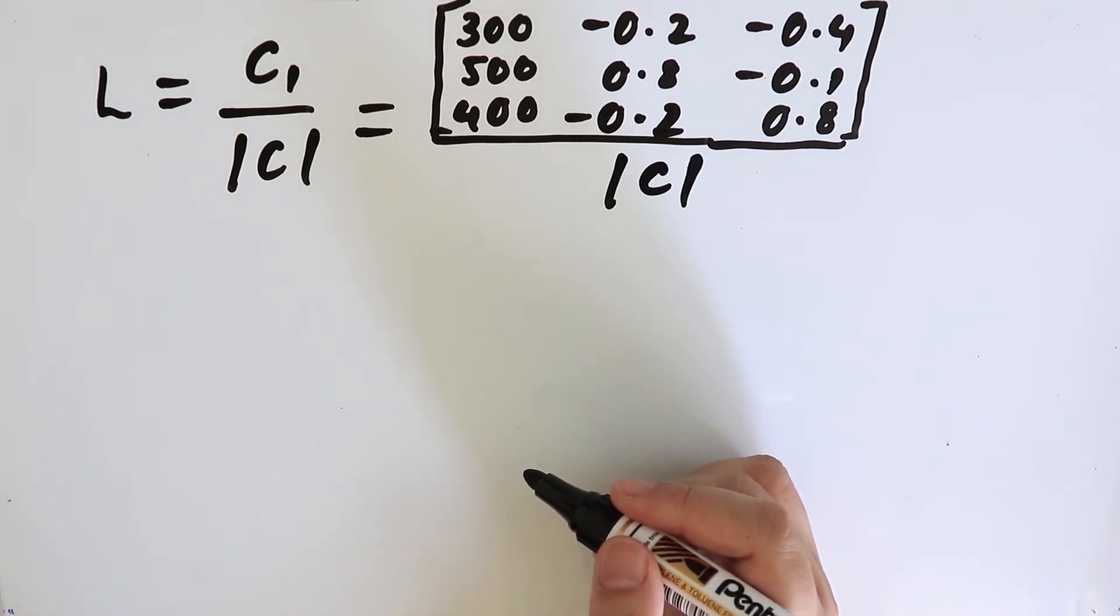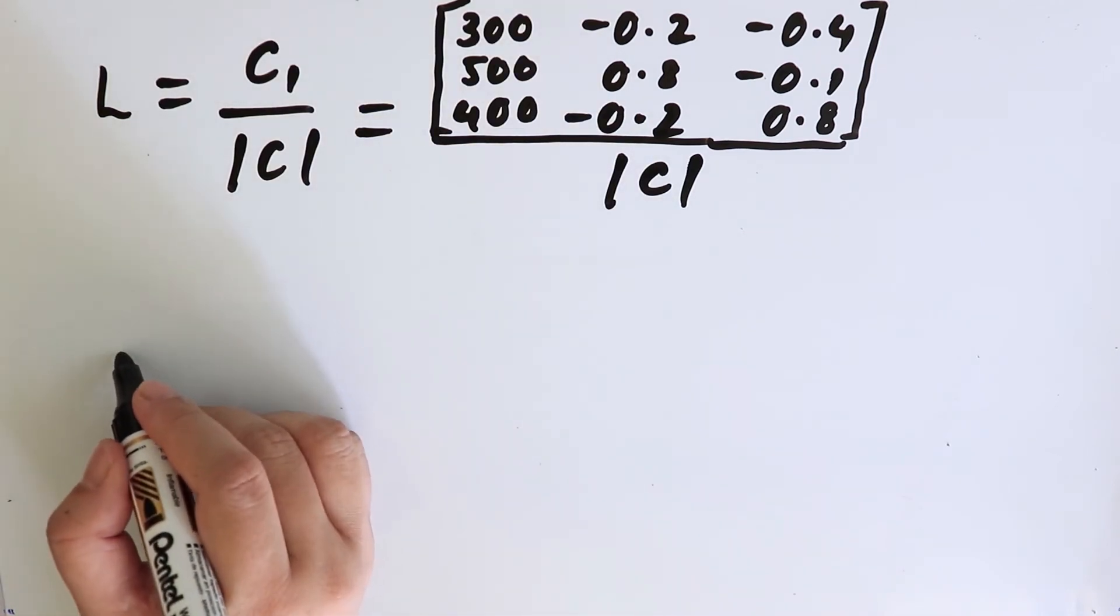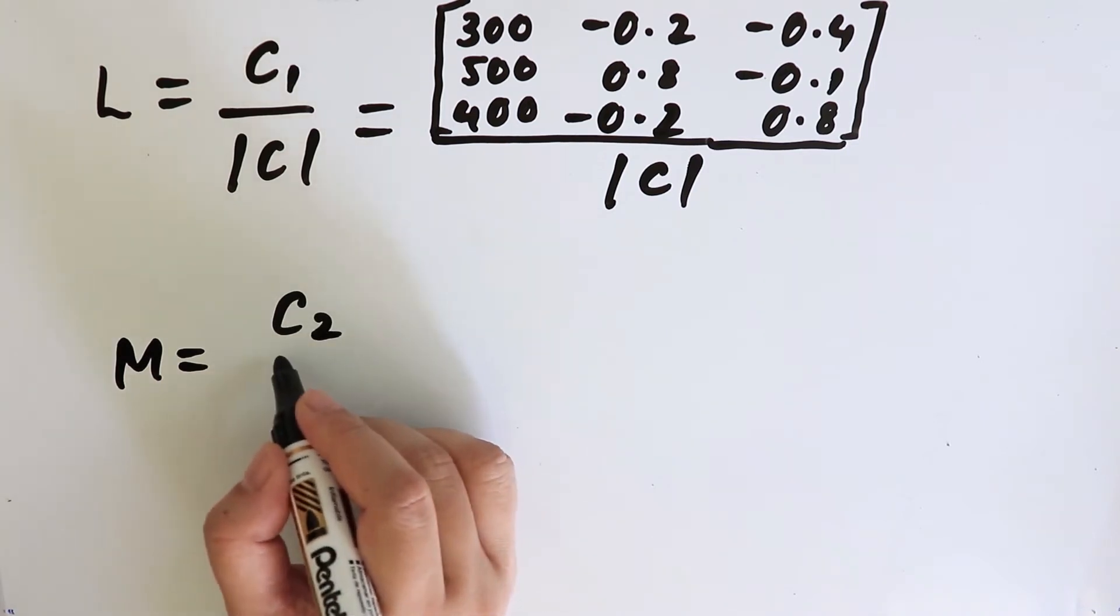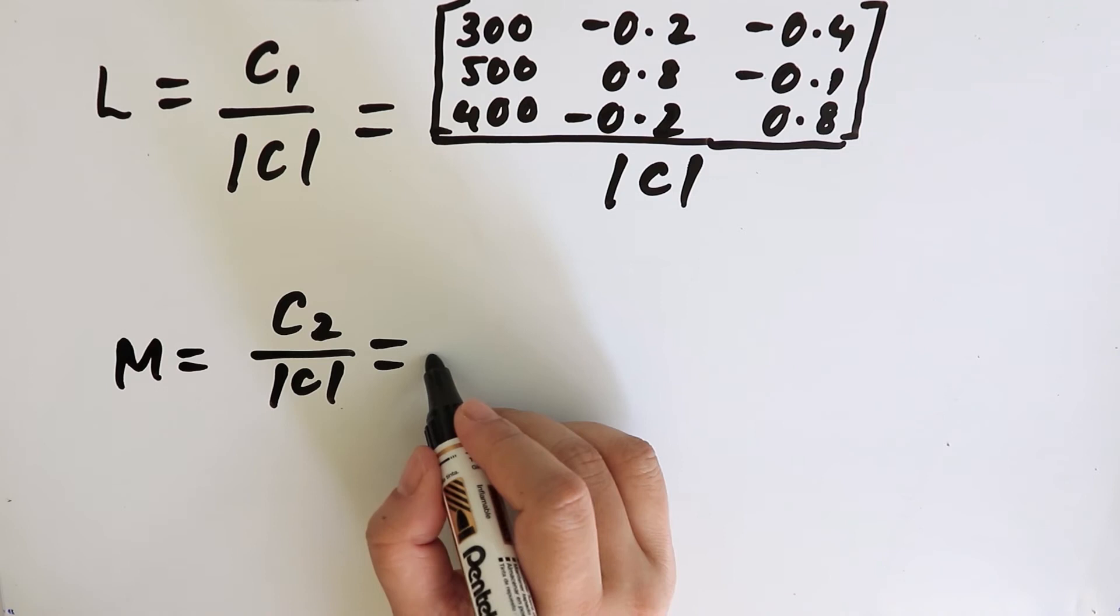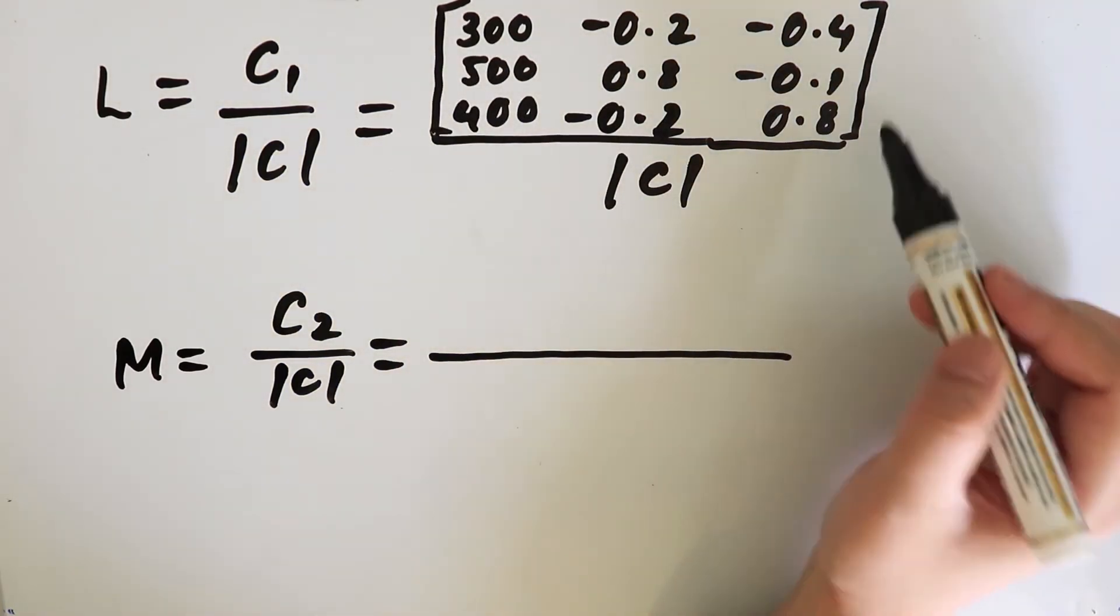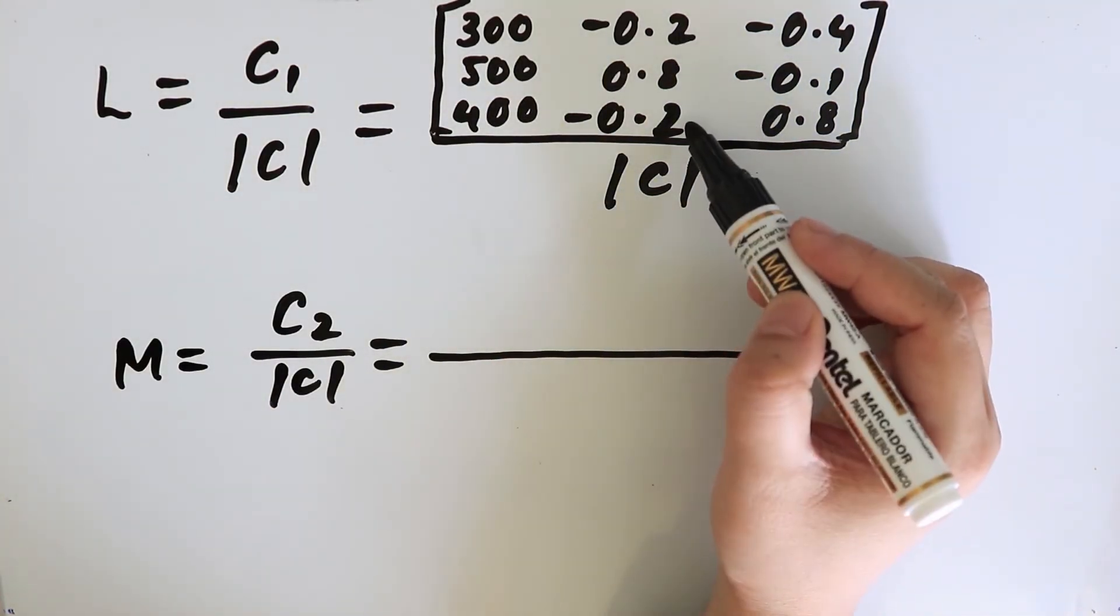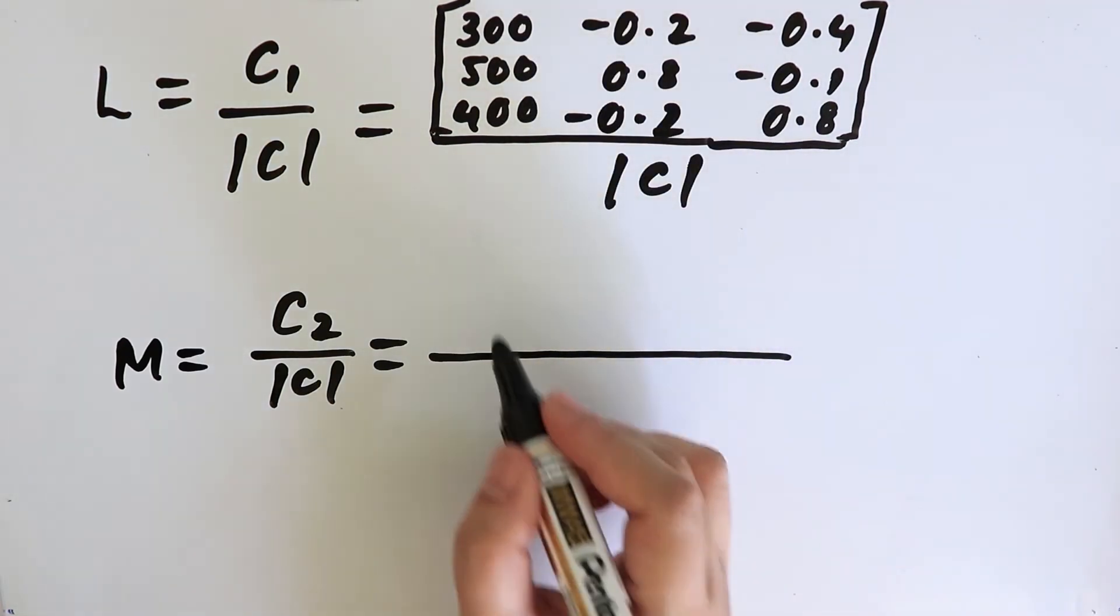Similarly, we find out the values for M and N. M will be C2 divided by determinant C. What is C2? C2 will be again the matrix of the coefficient, and in this case, the second column will be replaced by the values of the final demand vector.